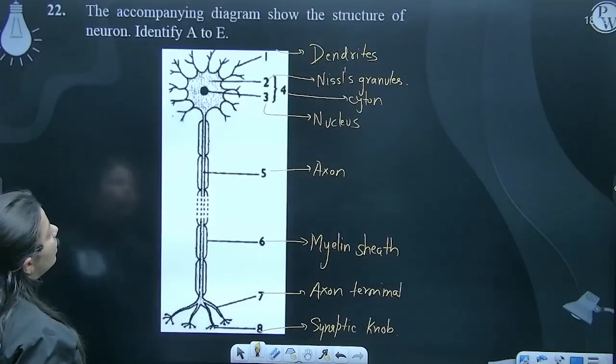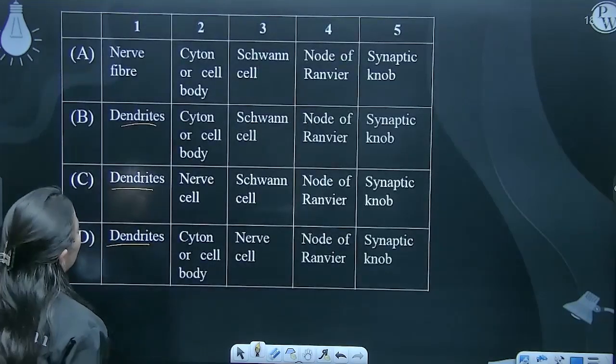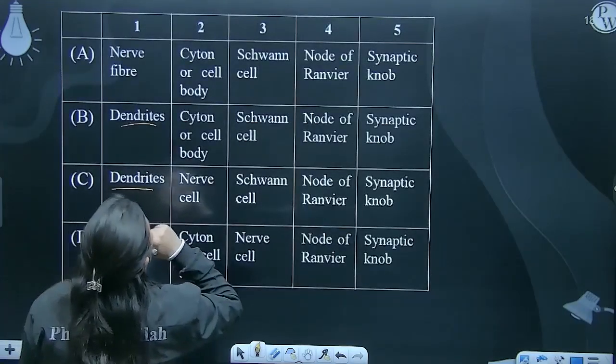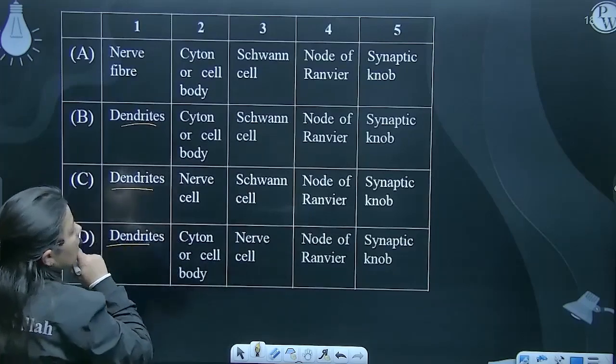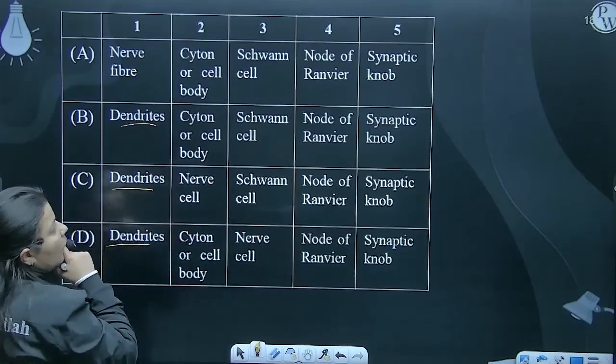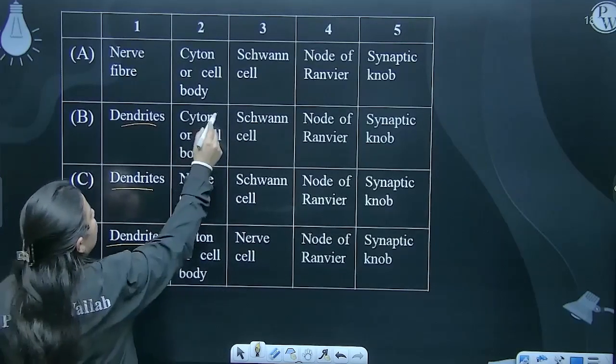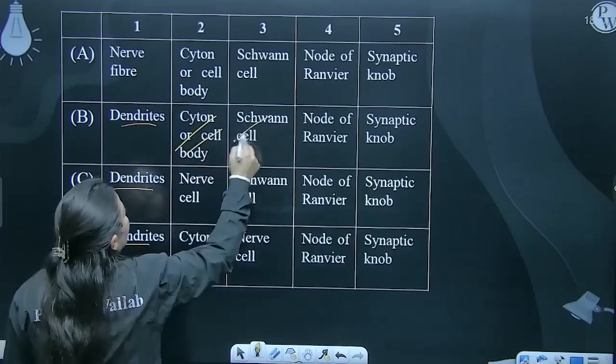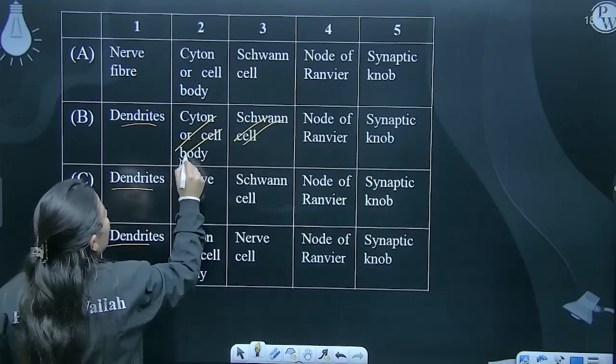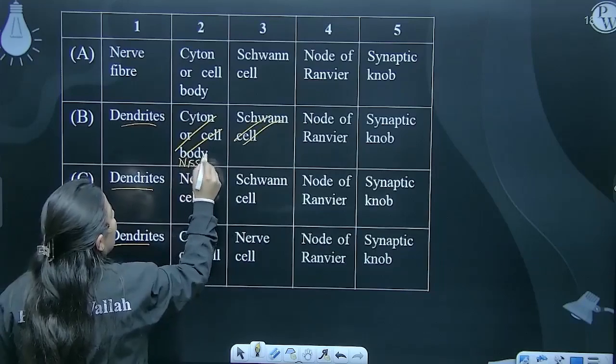2 is your Nissl granules and 3 is nucleus. 2 is Nissl granules, and 3 is nucleus. Okay, so I think we should correct something. You need to change the option here. Here it is Nissl granules.